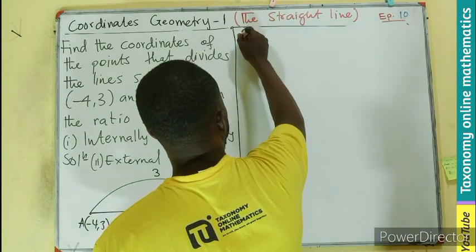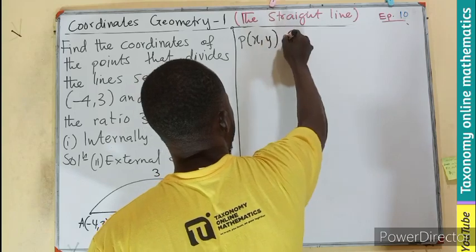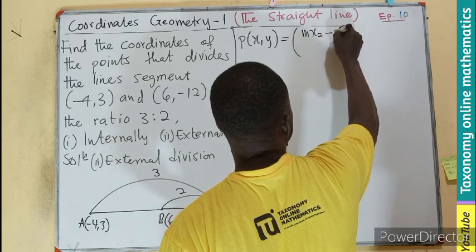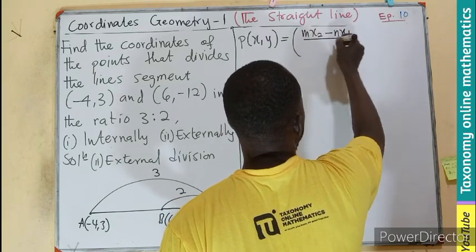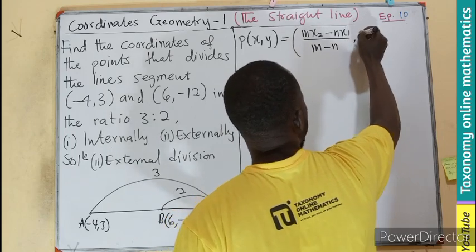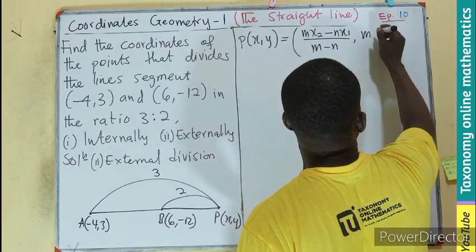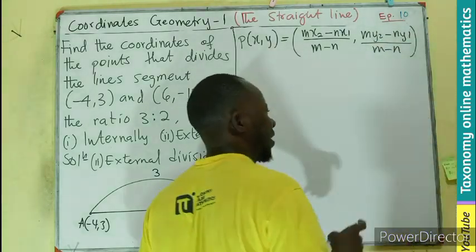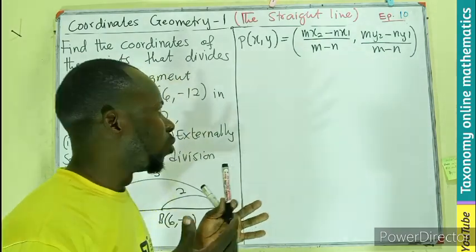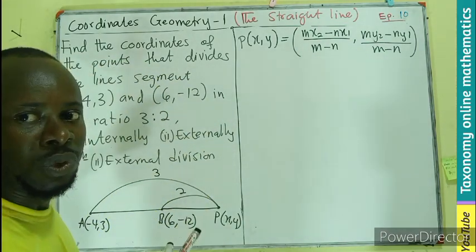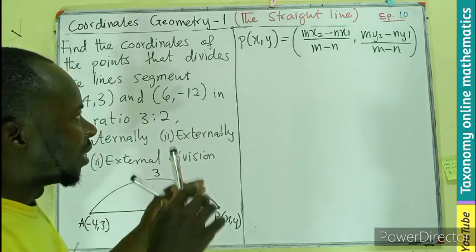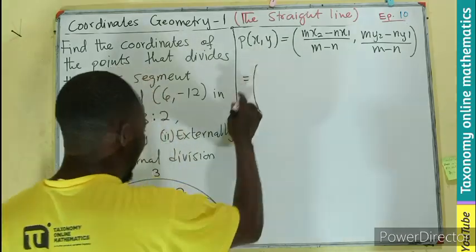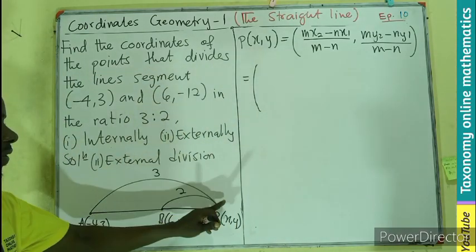So per recall, we can see that P(x,y) will have the formula to be M X2 minus N X1 divided by M minus N, and M Y2 minus N Y1 divided by M minus N. Remember, this is the formula we derived from episode number 9. So we are only going to use it and do substitution. The diagram, nothing, we just use the point in depth.